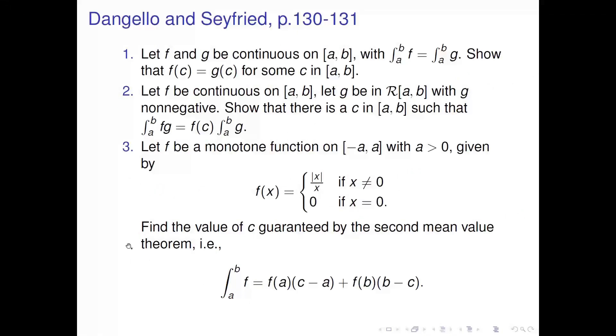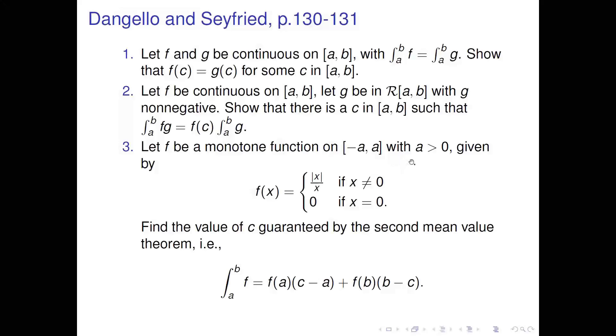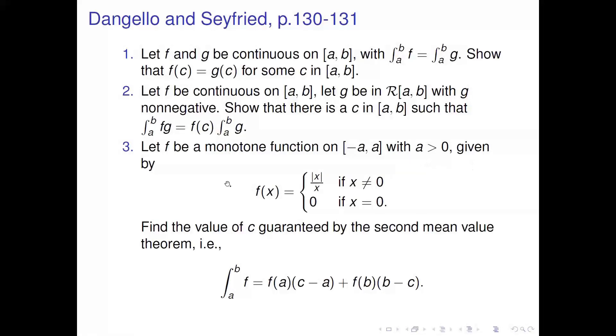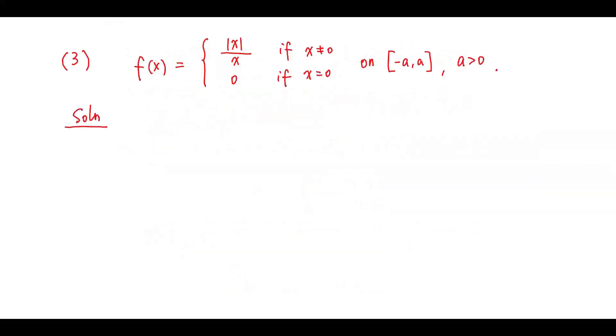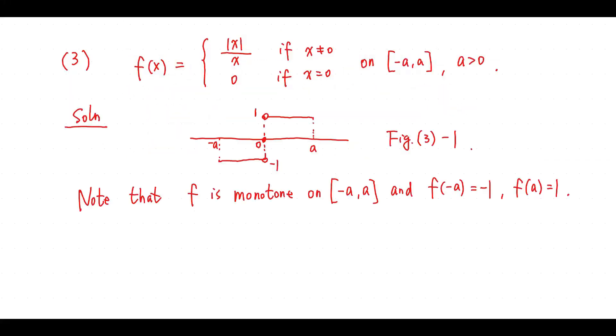Question 3. Let f be a monotone function on [-a, a] with a > 0, given by f(x) = |x|/x if x ≠ 0, and 0 if x = 0. Find the value of c guaranteed by the second mean value theorem. Solution. Note that f is monotone on [-a, a], and f(-a) = -1.